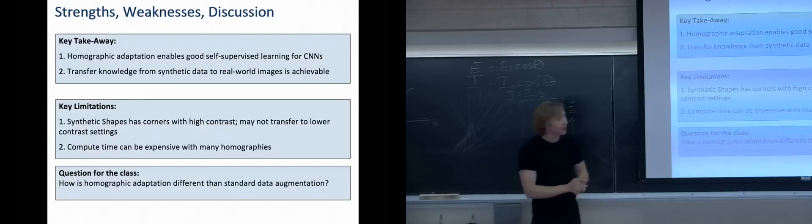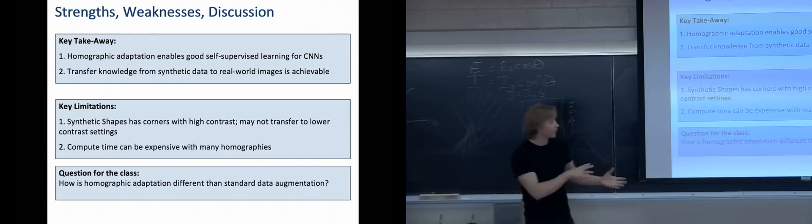So, key takeaways: we have that homographic adaptation enables good self-supervised learning, so this is a technique that we can use in the future for this task, and transfer knowledge from synthetic data is achievable. When you want to just apply it to real-world images, that's actually something that works, as we see, since they use synthetic shapes and then apply it to real-world images like COCO.